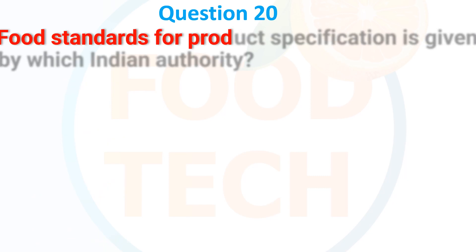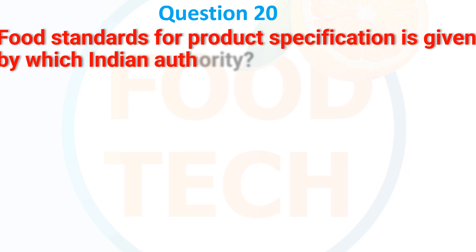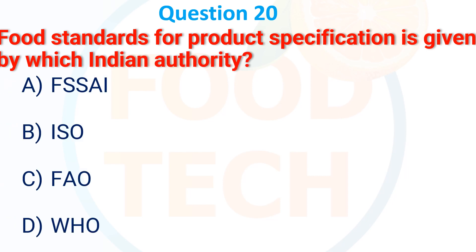The food standard for product specification is given by which Indian authority? A. FSSAI, B. ISO, C. FAO, D. WHO. The answer is FSSAI.